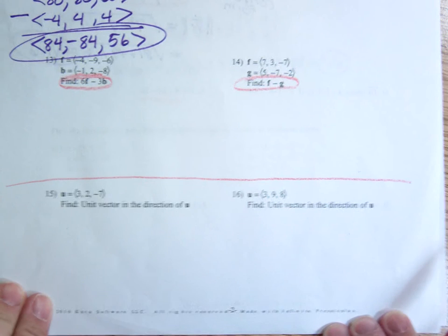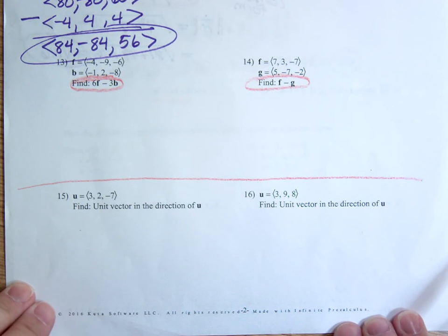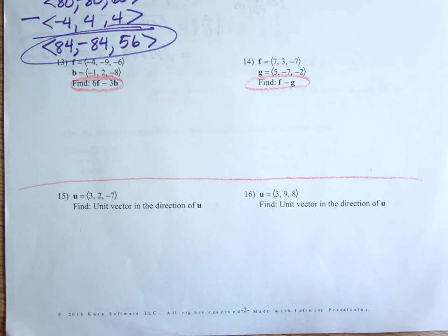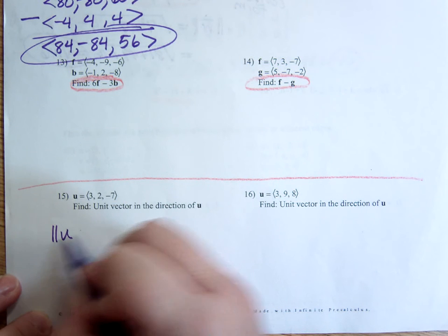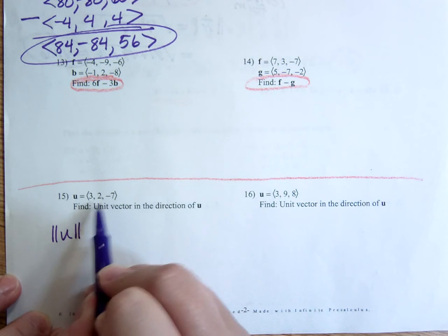15 and 16. As I said in one class today, if you don't know how to find a unit vector now, we're in trouble. You should know how to find a unit vector in the direction of a vector. And that's where you take that vector and you find its magnitude and you divide the whole vector by the magnitude.